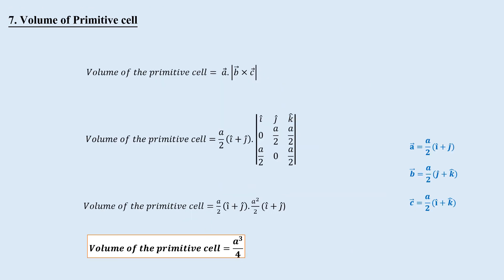Volume of the primitive cell: Calculating the volume of the primitive cell of FCC gives a³/4. Hence, the volume of the primitive cell is one-fourth the volume of the unit cell.